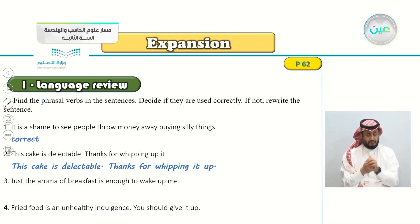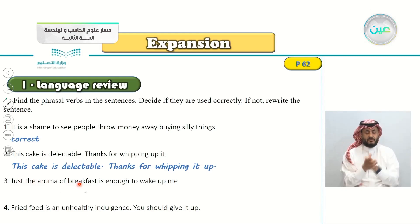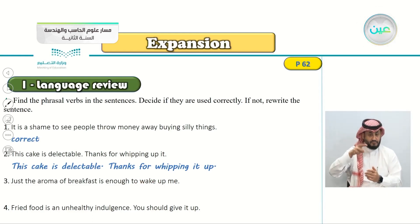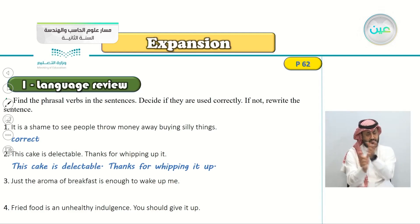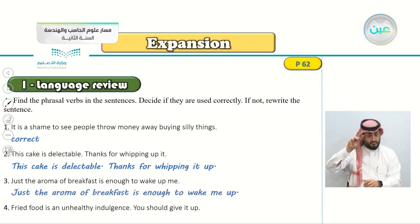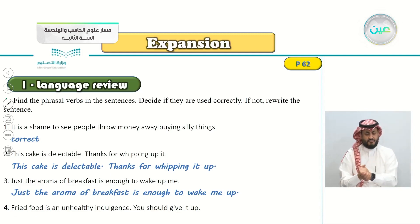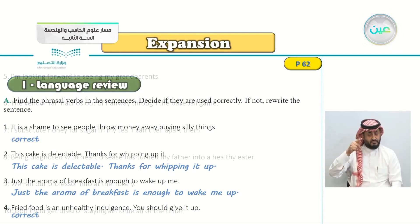Number three: 'Just the aroma of breakfast is enough to wake up me.' The phrasal verb is 'wake up.' This is incorrect. The correct way is: 'wake me up.' So: 'The aroma of breakfast is enough to wake me up.' Number four: 'Fried food is an unhealthy indulgence. You should give it up.' This one is correct — 'give it up' is correctly placed.